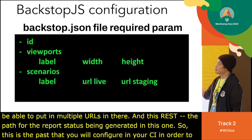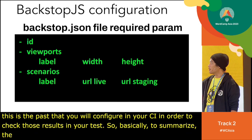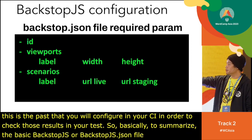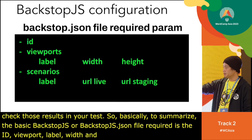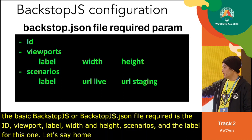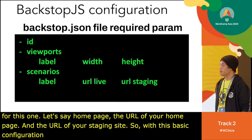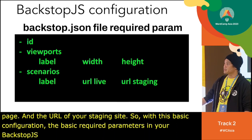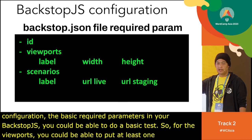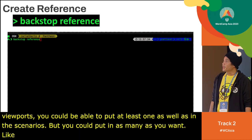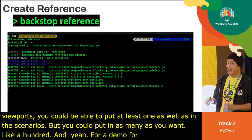To summarize, the basic required fields in backstop.json are: id, viewport label with width and height, scenarios with a label (e.g., 'Home Page'), the reference URL, and the test URL. With this basic configuration you can run a test. You need at least one viewport and one scenario, but you can add as many as you want — even 100.